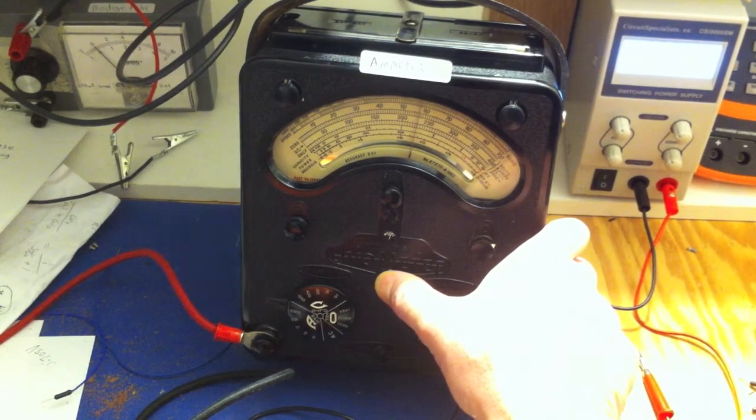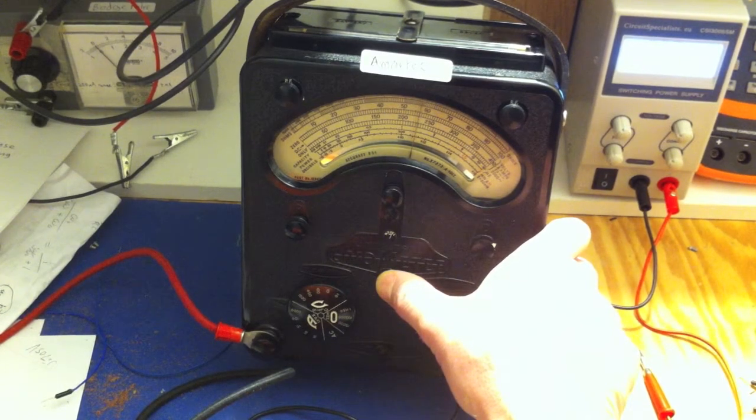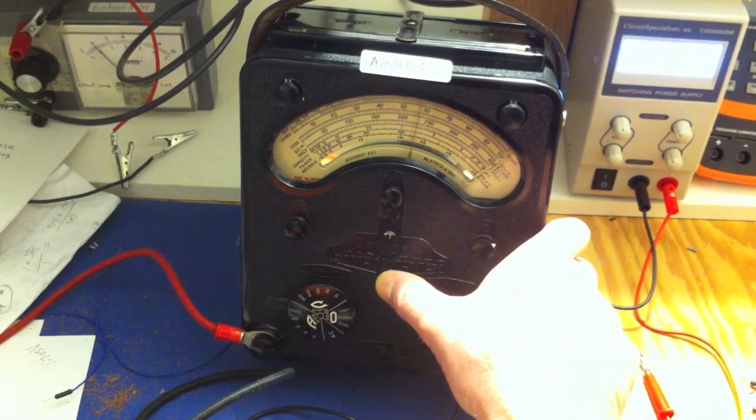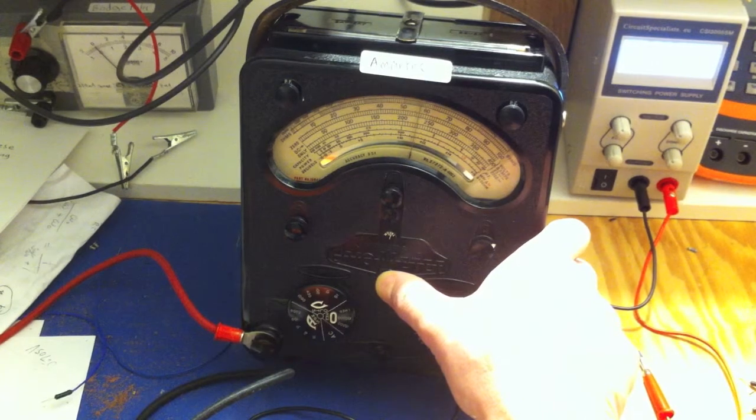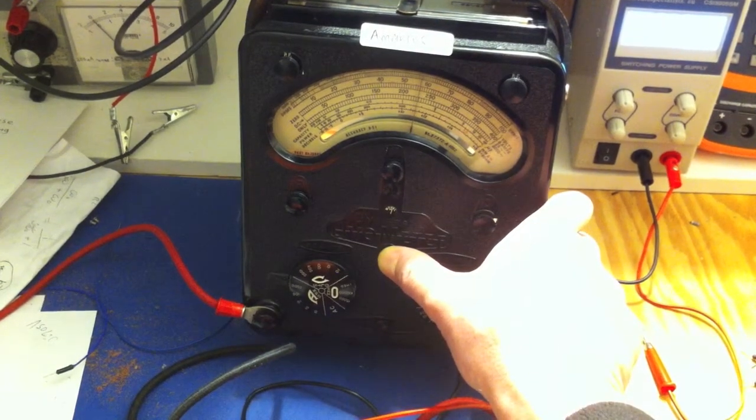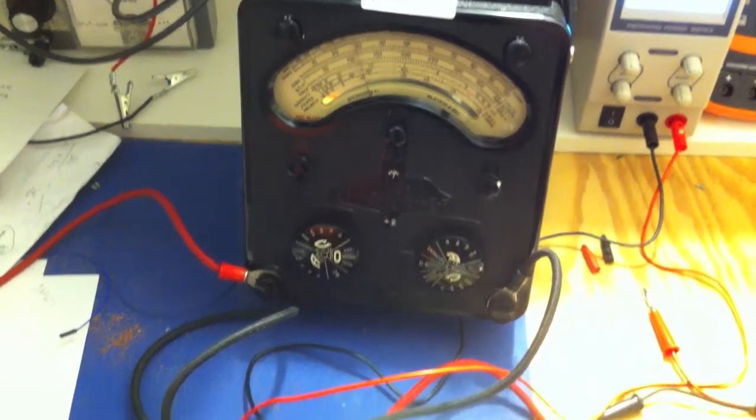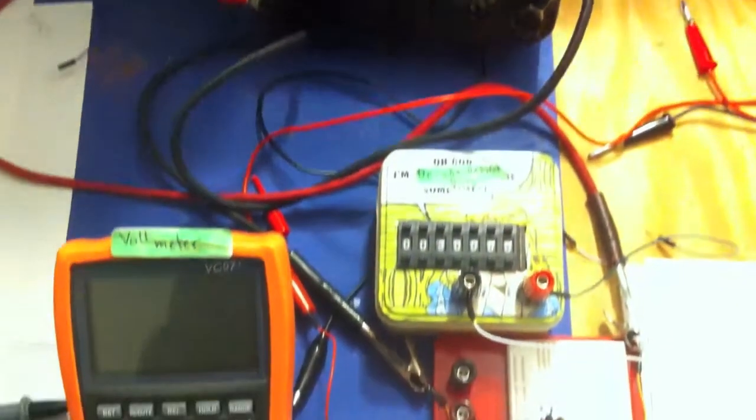That's actually reading 0.57 milliamps. So that's reading 0.57 milliamps. It's very accurate. So we know that is the current that's showing.